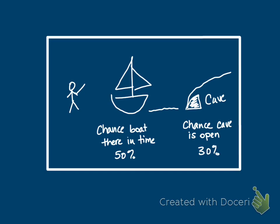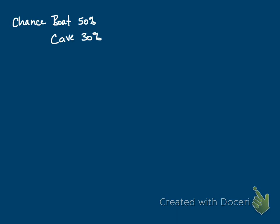Let me summarize this so we have more space. The programmers have made it so that the chance the boat is going to be there in time is 50 percent, and the chance the cave is going to be open is 30 percent. He needs both to happen in order to get through to the first stage — a mini dragon. Rather than leave it to fate, the programmers have set the chance of both being open at the same time to 10 percent, or 0.1.